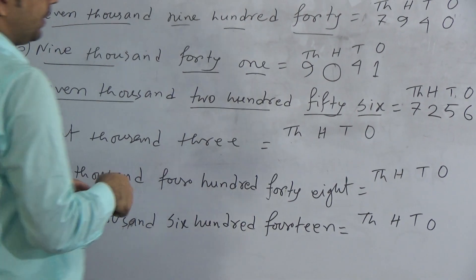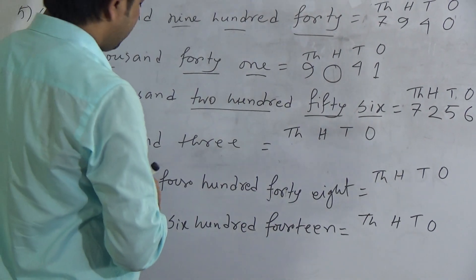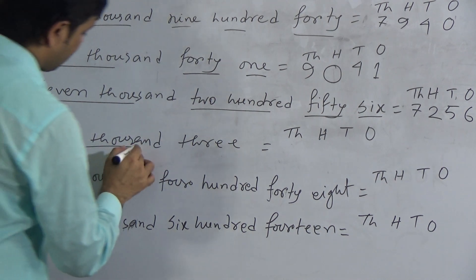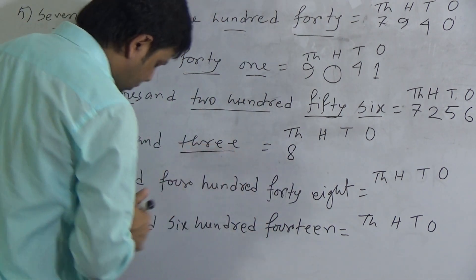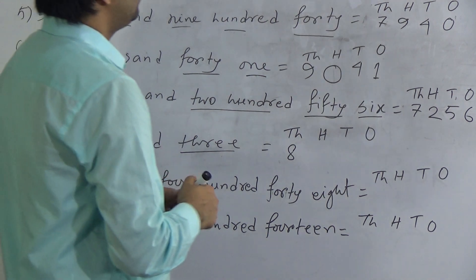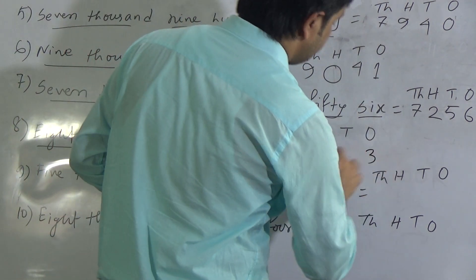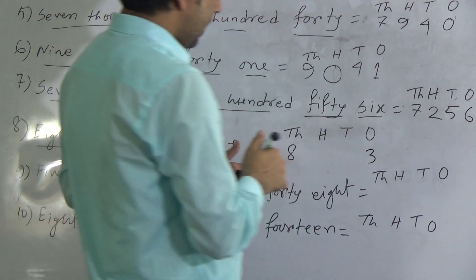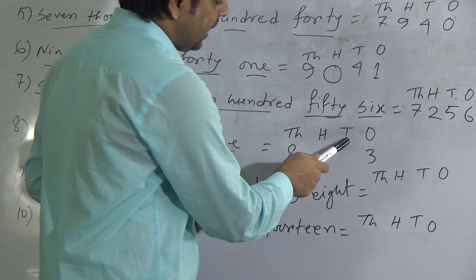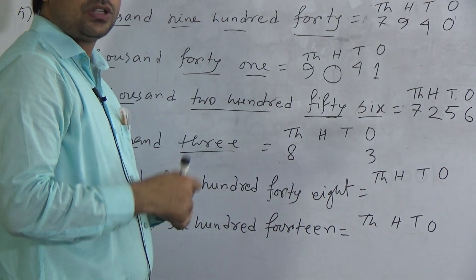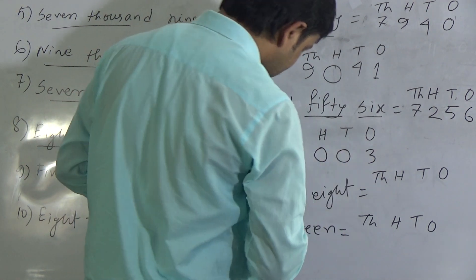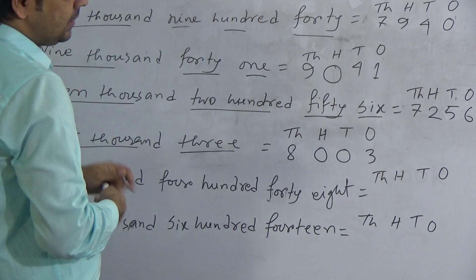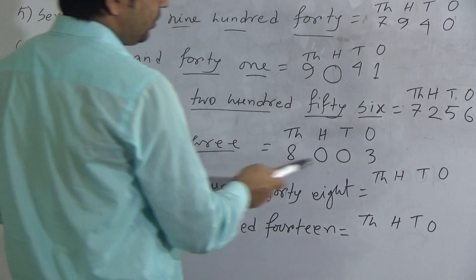Question 8: eight thousand and three — 8003. We write 8 below thousands. As here is only 3, we fill the ones place with 3. The hundreds place and tens place are blank, so we fill up both positions with 0. This is 8003.